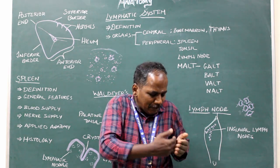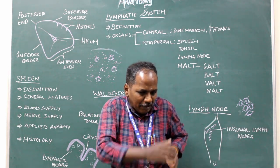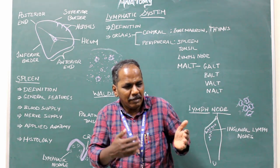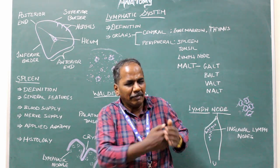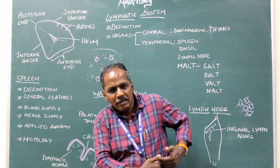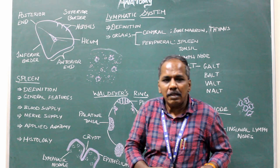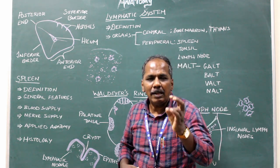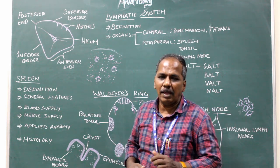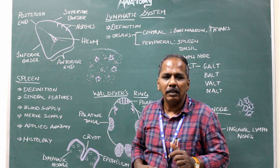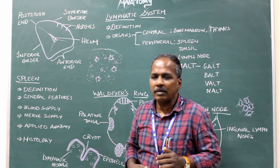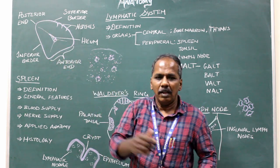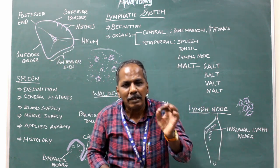The diaphragmatic surface is related to the diaphragm, which in turn is related to the 9th, 10th, and 11th ribs. The long axis of the spleen is in line with the 10th rib.